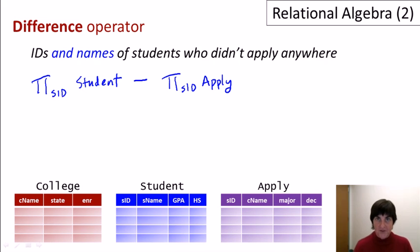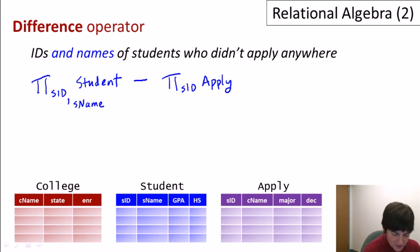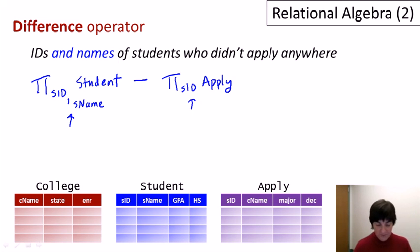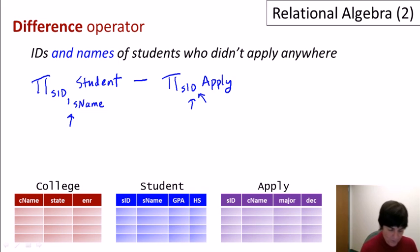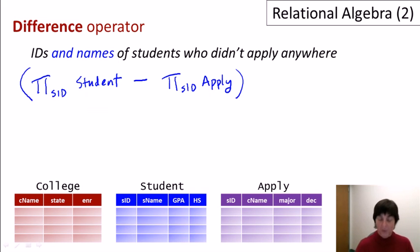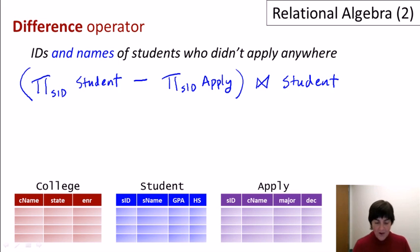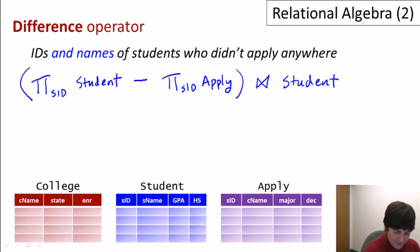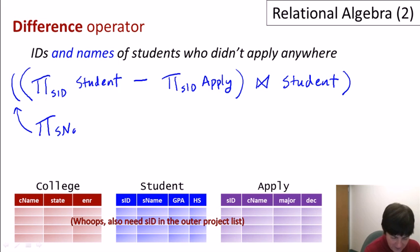Suppose instead we wanted the names of students who didn't apply anywhere, not just their IDs. You might think to just add student name to the projection list, but then we're trying to subtract a set with just IDs from a set with ID-name pairs — and student name isn't part of the apply relation. The trick is to take the whole expression that gives us student IDs who didn't apply anywhere and do a natural join back with the student relation. This is called a join back. It gives us the full student relation schema, and then we project the student name to get our desired answer.